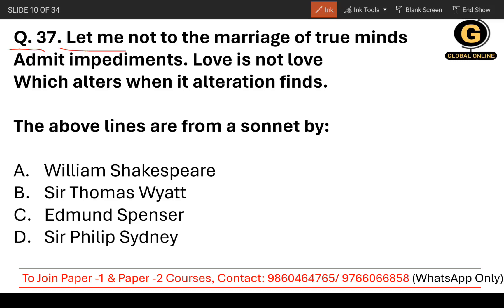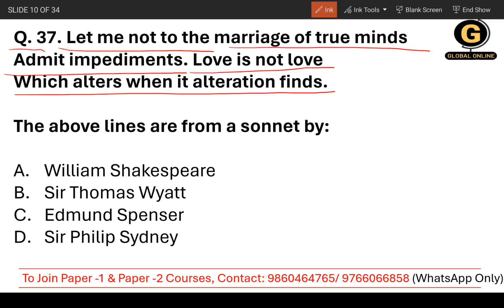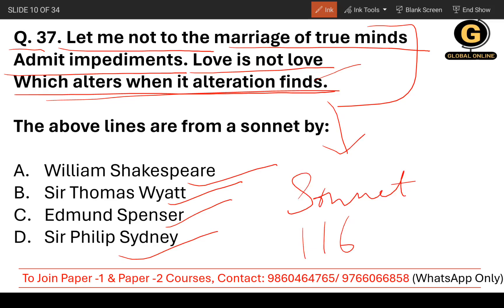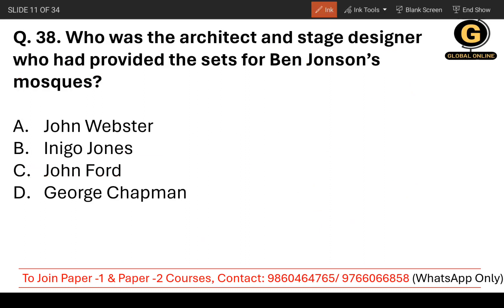Question number 37: 'Let me not to the marriage of true minds admit impediments. Love is not love which alters when it alteration finds.' Love is not love if it changes. You need to find out that the above lines are from a sonnet by whom — William Shakespeare, Sir Thomas Wyatt, Edmund Spenser, or Sir Philip Sidney. These are the lines from Sonnet 116 by William Shakespeare, so the first option is the correct answer.